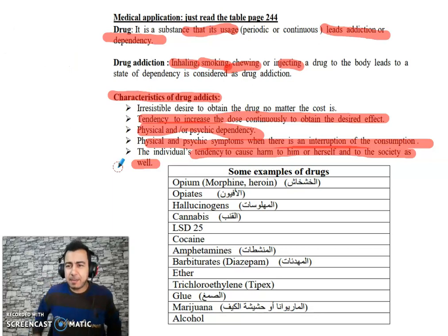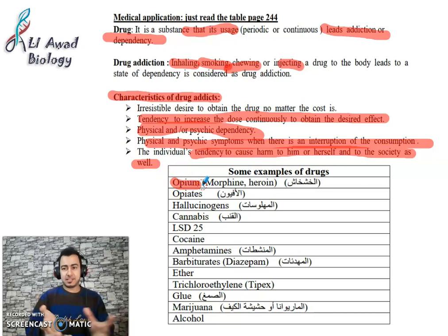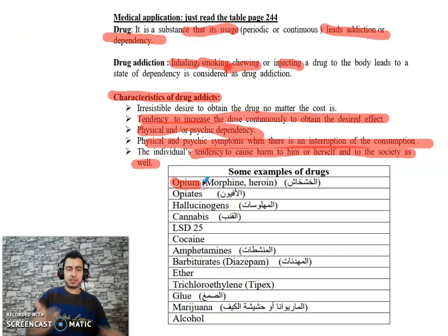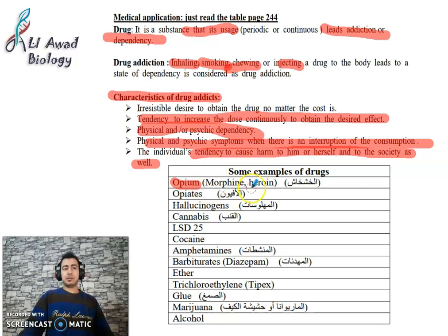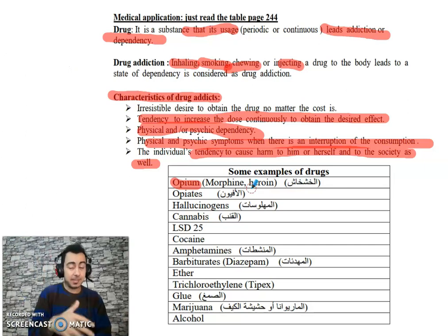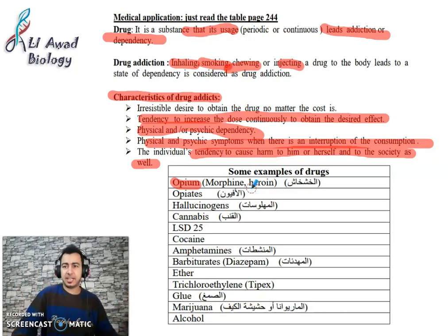Some examples of drugs: opium comes from the poppy plant (الخشخاش). You can look it up online for full details. From it, two powders or liquids are extracted: morphine and heroin, and they are injected. They are among the most dangerous types of drugs — they can lead to addiction after just two or three doses.